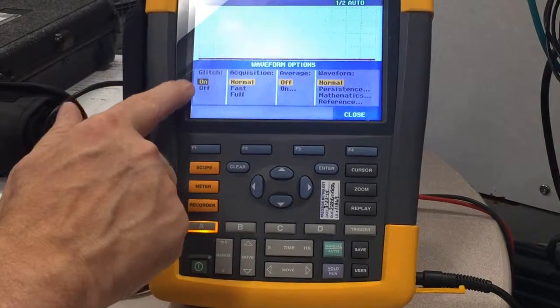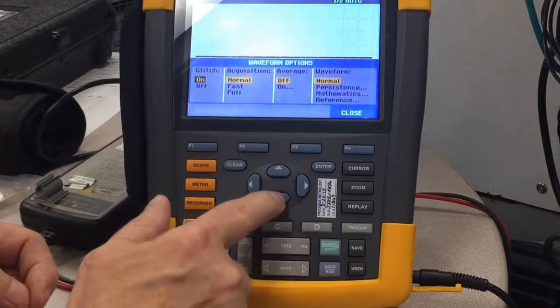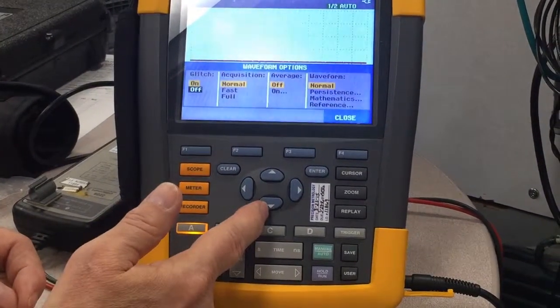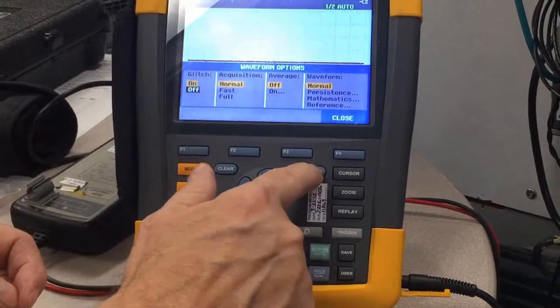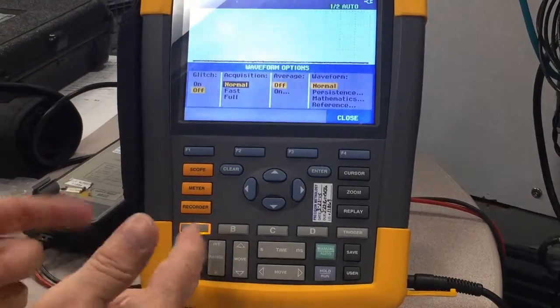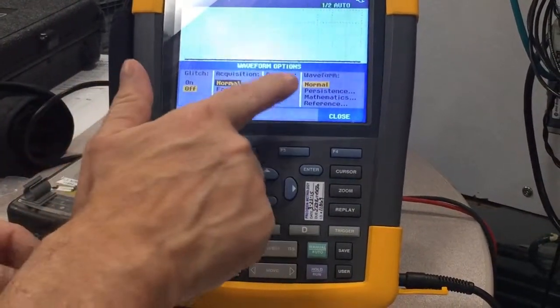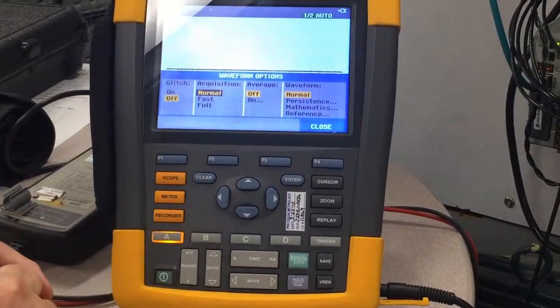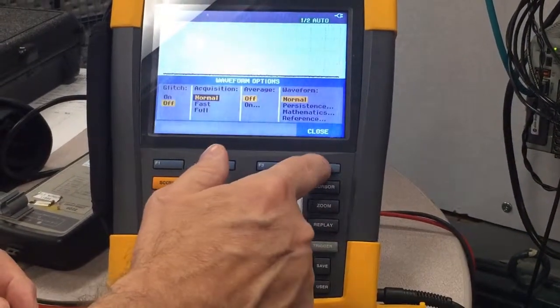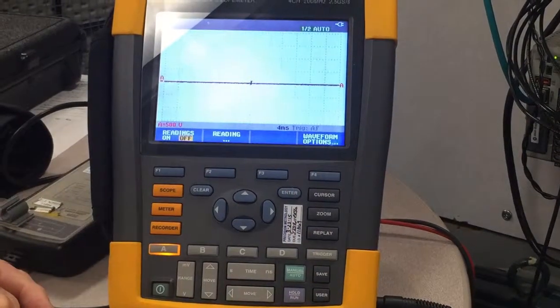And I like to turn off glitch detect. So, we turn with the down arrow key. We turn it to off. Make sure you press Enter. Now, it's off. Normal acquisition. Averaging is off. And it's on normal persistence. So, that is all set up.